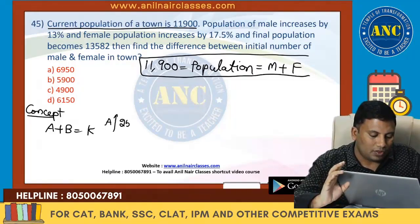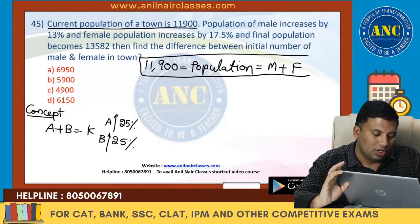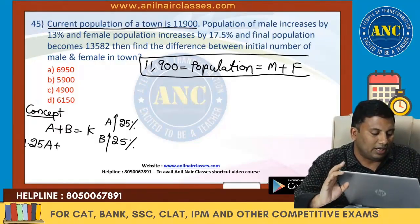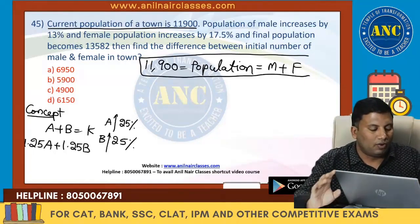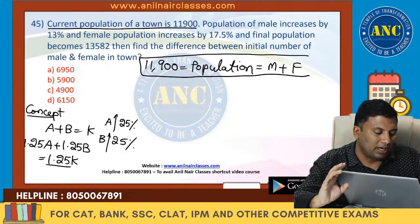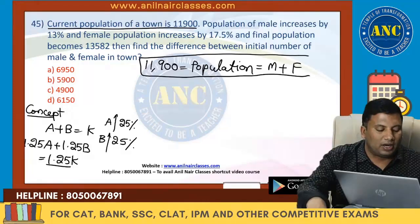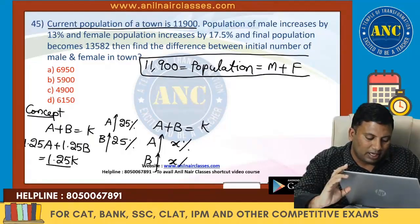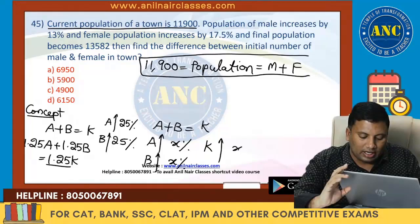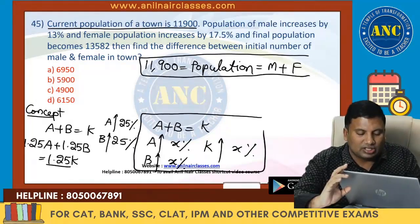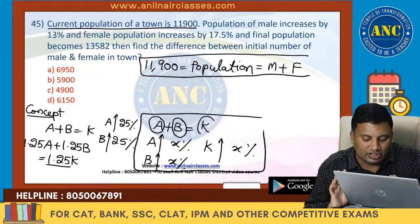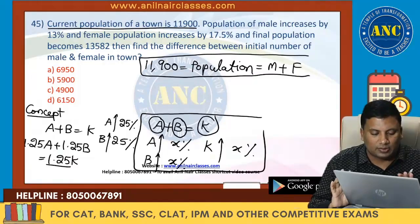Suppose A increases by 25% and B increases by 25% — then A becomes 1.25A, B becomes 1.25B, and K will also increase by 25%. Very, very important. If A plus B equals K, and A increases by X% and B increases by X%, then K also increases by X%.